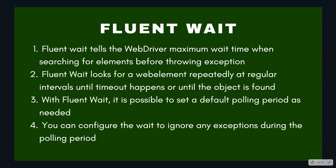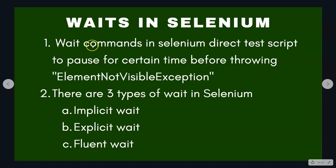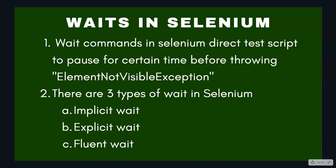With fluent wait you can also configure it to ignore any exceptions during the polling period. If there are any exceptions within that polling period, you can specify to ignore those until the timeout has expired. To reiterate: waits are a very important concept to rectify synchronization issues in Selenium WebDriver. There are three types — implicit, explicit, and fluent — and all of them are dynamic waits. We will cover the commands to implement each in further tutorials. Hope you liked the tutorial, thank you very much for watching.